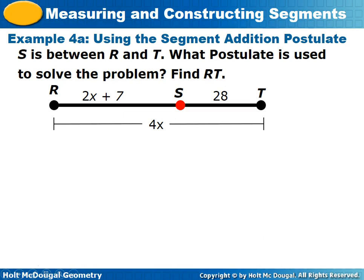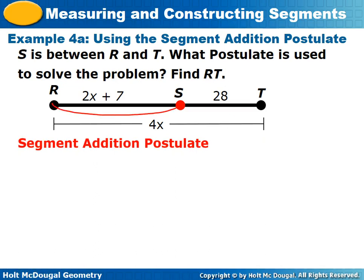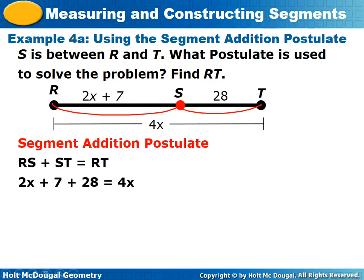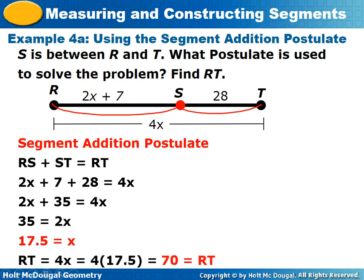Example 4A: using the Segment Addition Postulate, RS plus ST equals RT. So (2x plus 7) plus 28 equals 4x. Combining like terms on the left: 2x plus 35 equals 4x. Subtracting 2x from both sides: 35 equals 2x. Dividing by 2: x equals 17.5. RT equals 4(17.5) equals 70. Check: RS equals 2(17.5) plus 7 = 35 plus 7 = 42. Then 42 plus 28 equals 70. Correct. You can check all of these problems.